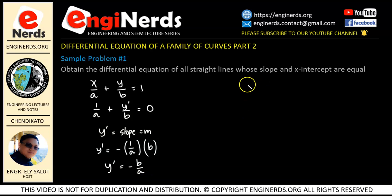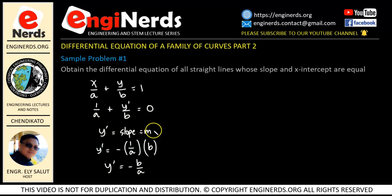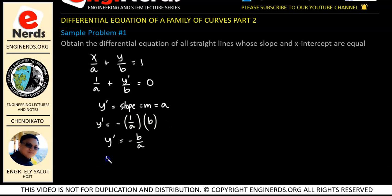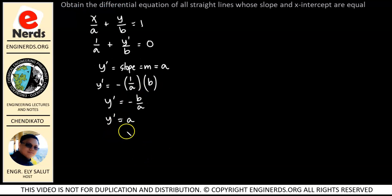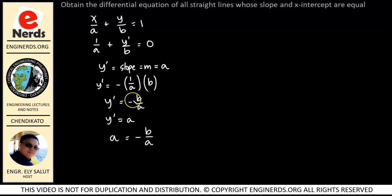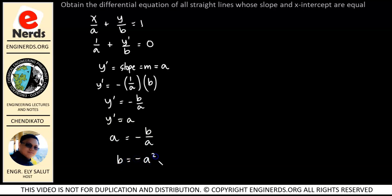We have to remember from our given that the slope and the x-intercept are equal. Therefore, y prime, which is the slope, is also equal to a, the x-intercept. So y prime is equal to a. We can write this as a is equal to negative b over a. If we isolate b, we will have b is equal to negative a squared. We need to take note of this value.